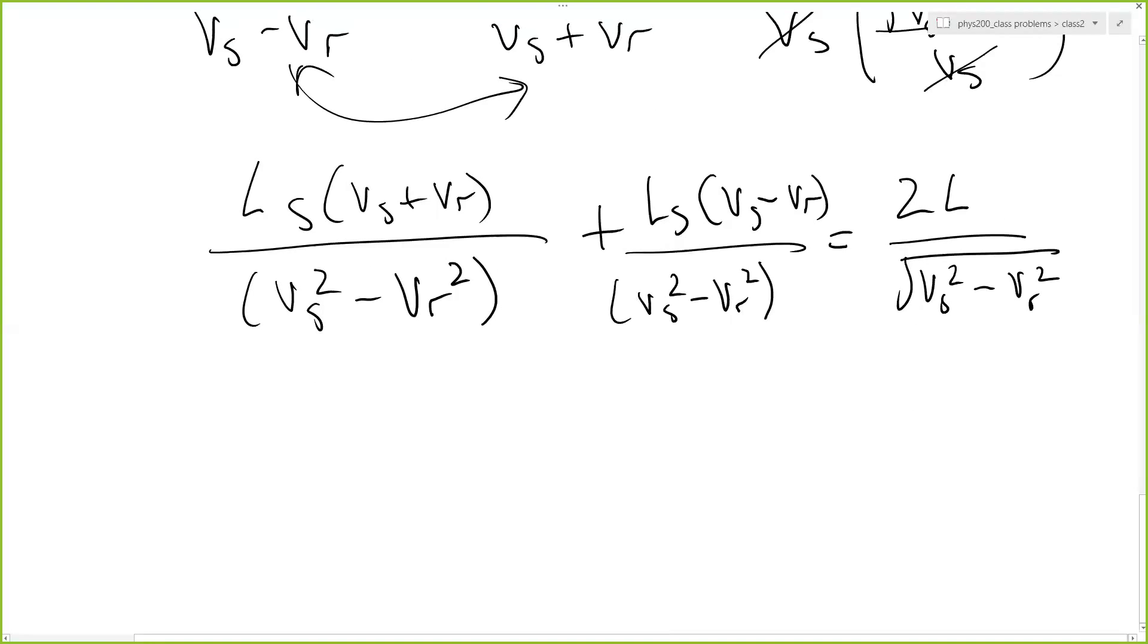Plus Ls into Vs minus Vr over Vs squared minus Vr squared, which is equal to 2L divided by the square root of Vs squared minus Vr squared. And then we can simplify that by multiplying the top out because obviously they have the same denominator. And if you add the top, you're going to end up with 2Ls Vs, because the Vr will cancel.